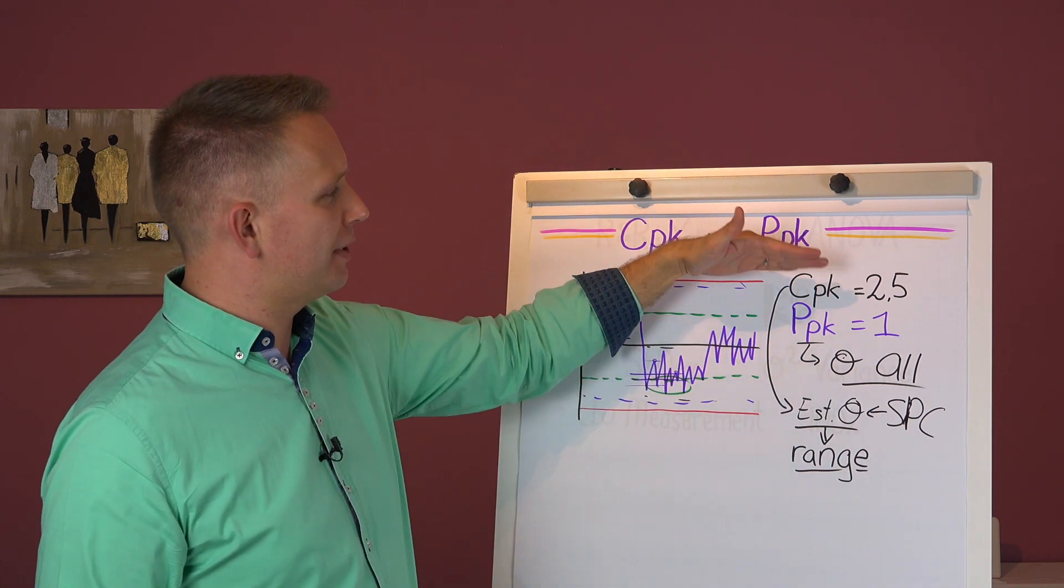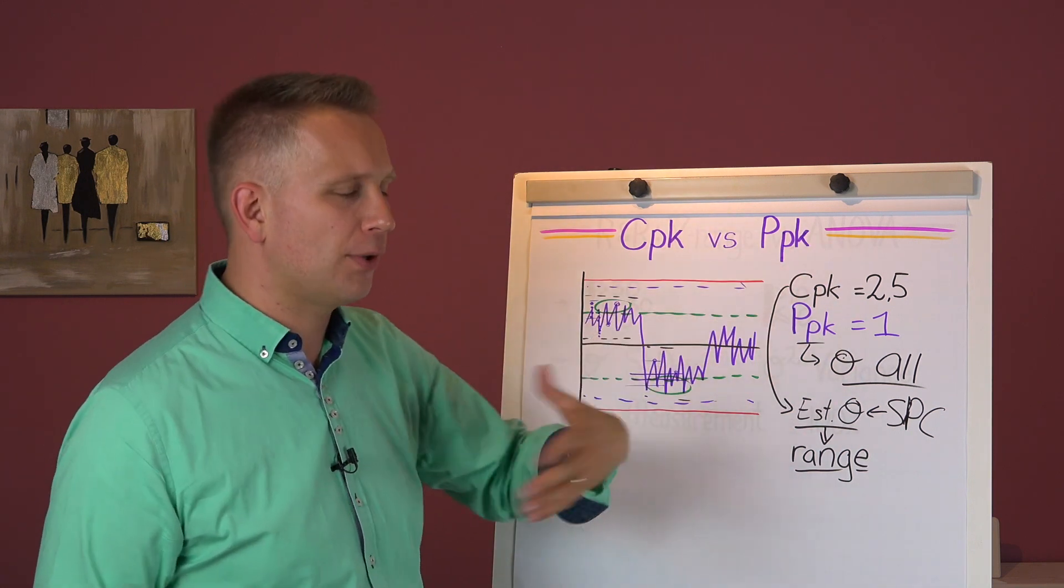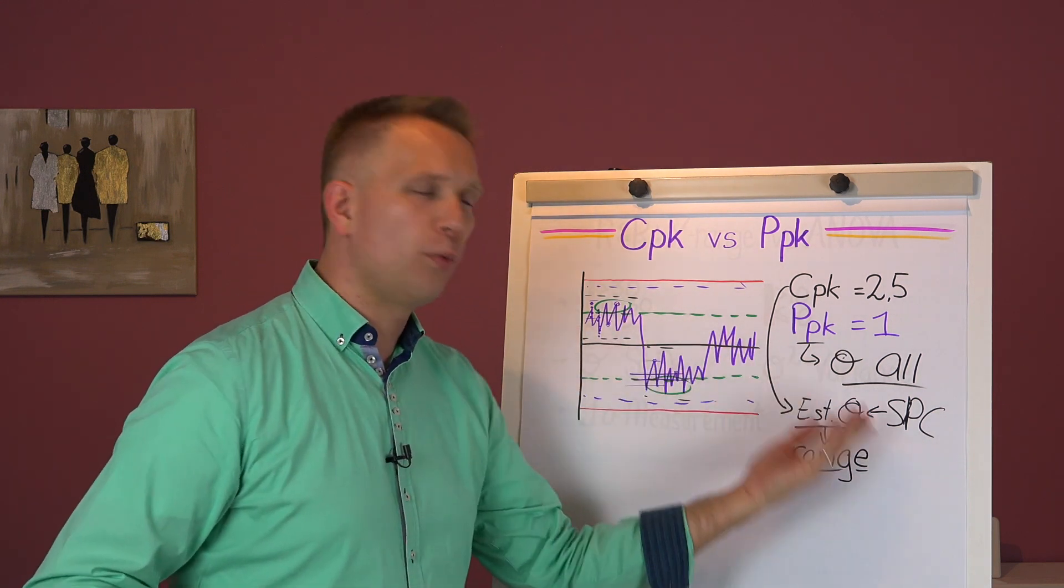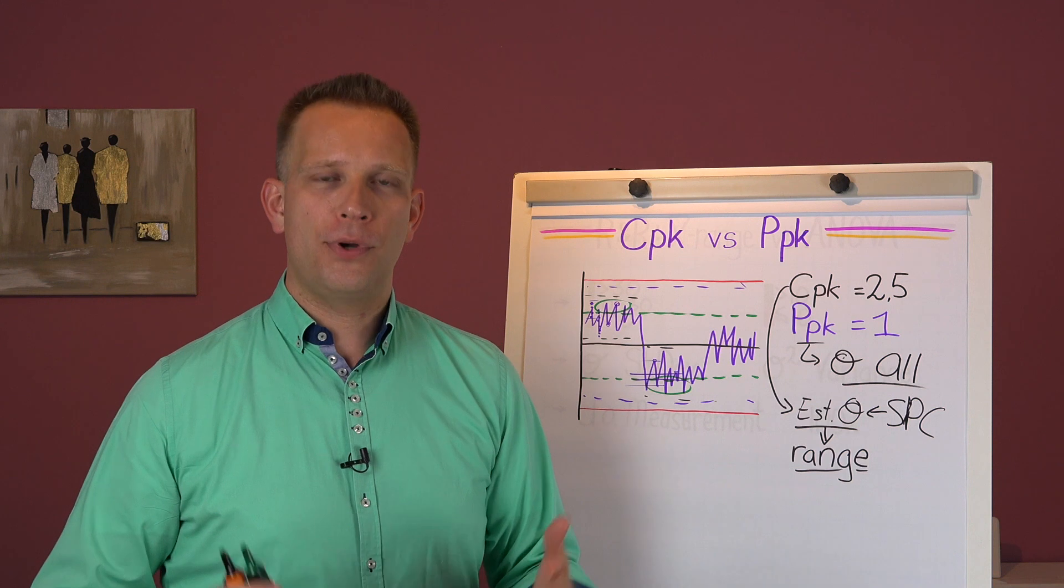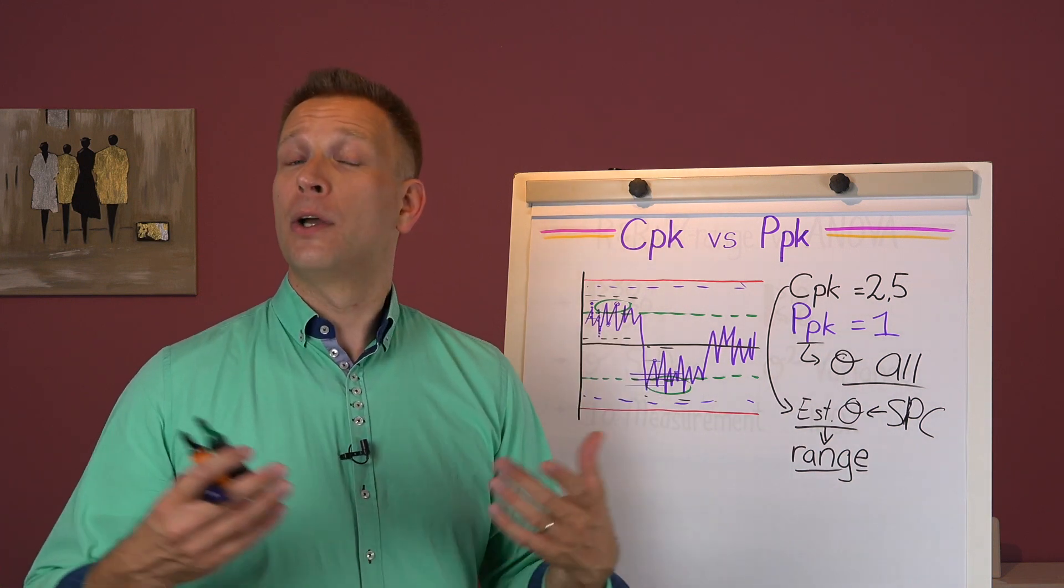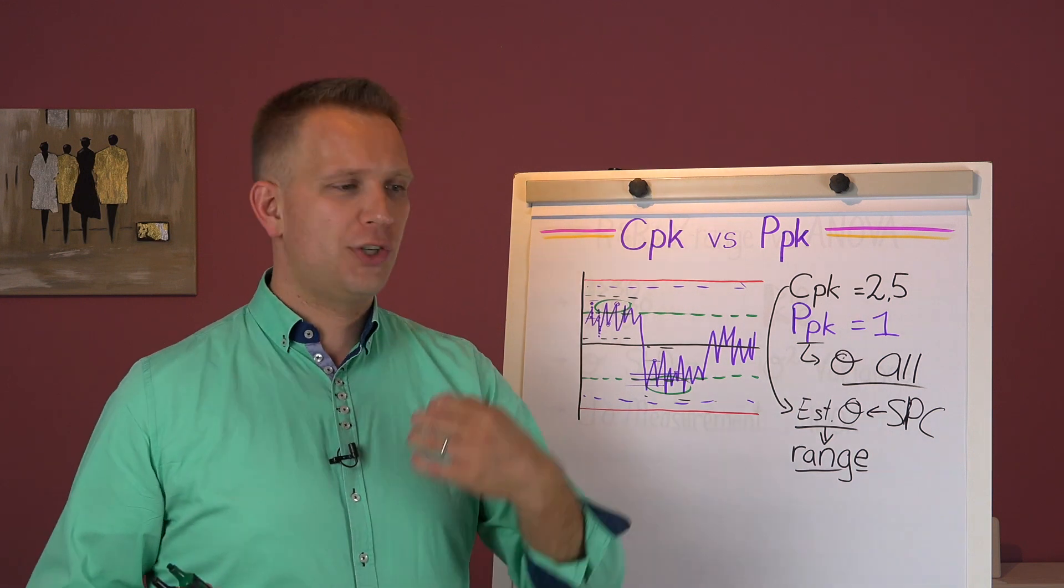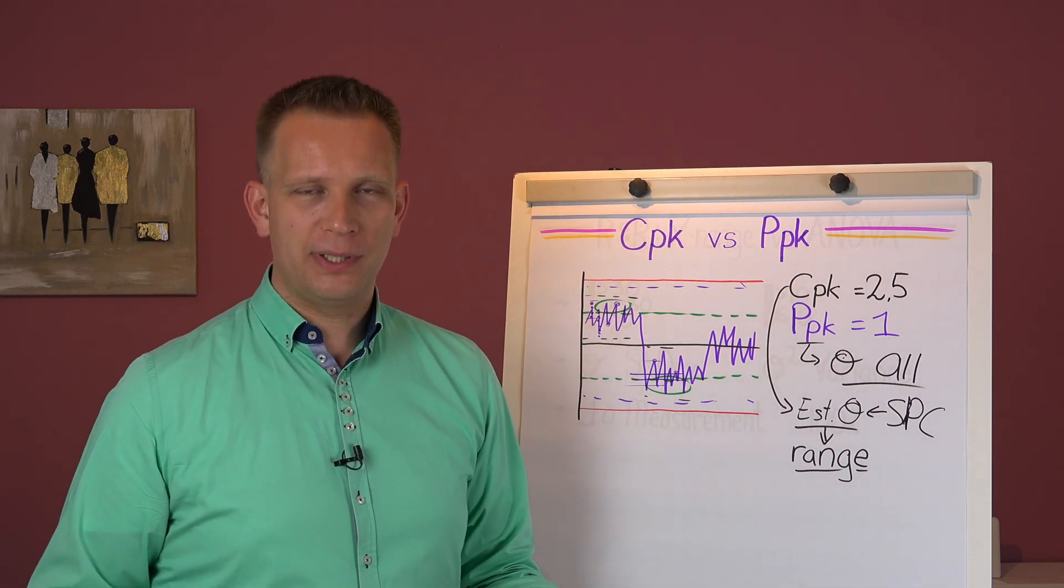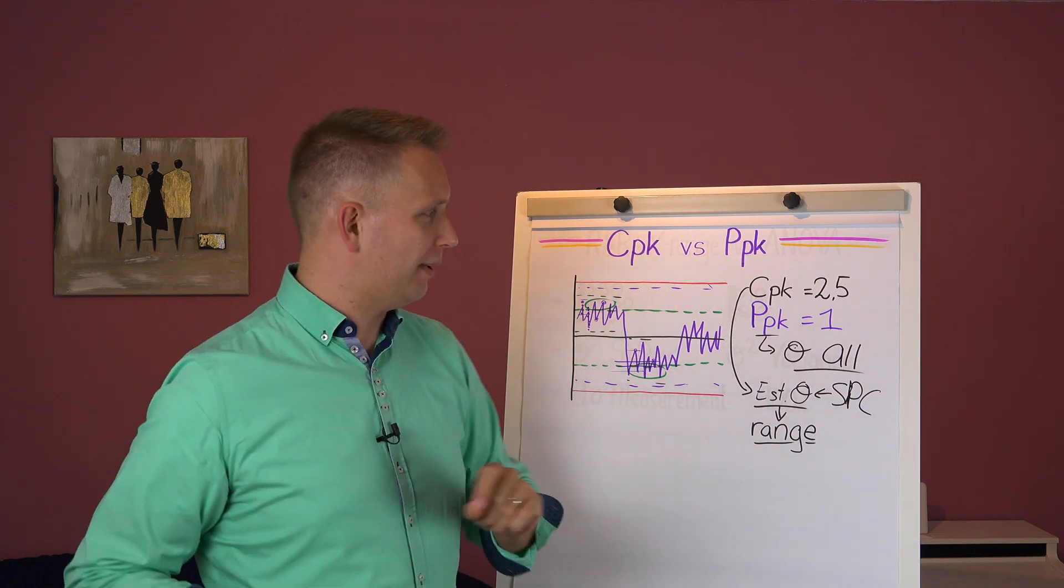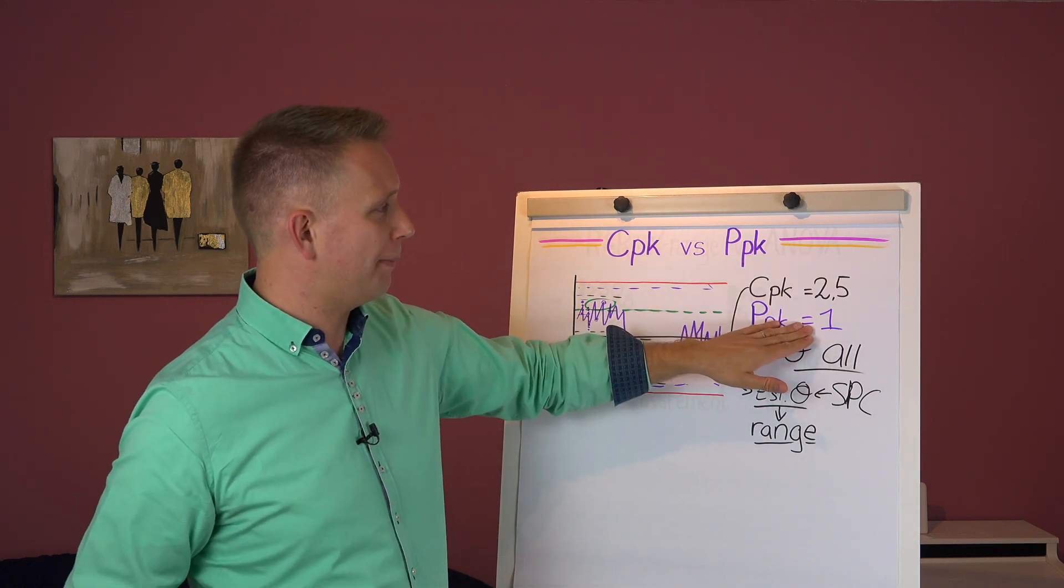And this nice ratio of the CPK divided by the PPK, that also gives you an indicator of how much worse we are doing over time. Can we keep our process centered or not? Can we keep it at least at the same level? Or do we have some seasonality shift, or maybe different operators doing different things? This is really useful information to have. So don't be alarmed if you see something like that happening.